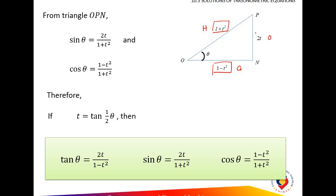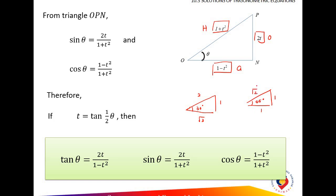So the opposite is 2T. We memorize: the opposite is 2T, the adjacent is 1 minus T squared, and the hypotenuse is 1 plus T squared. Remember the static triangle: for 30 degrees, sin is 1 over 2, so the sides are 1, 2, and root 3. For 45 degrees, the sides are 1, 1, and root 2. So that is how you remember the static triangle. Now, using the substitution method: opposite is 2T, adjacent is 1 minus T squared, hypotenuse is 1 plus T squared.